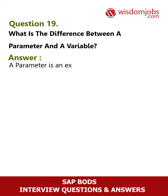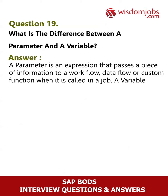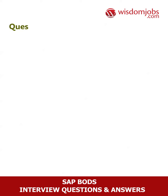Question 19: What is the difference between a parameter and a variable? Answer: A parameter is an expression that passes a piece of information to a workflow, data flow, or custom function when it is called in a job. A variable is a symbolic placeholder for values.